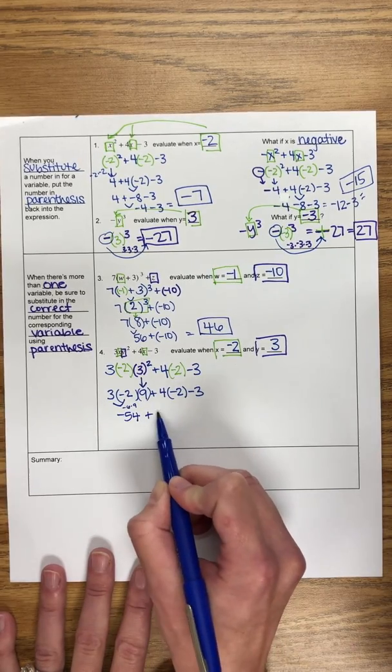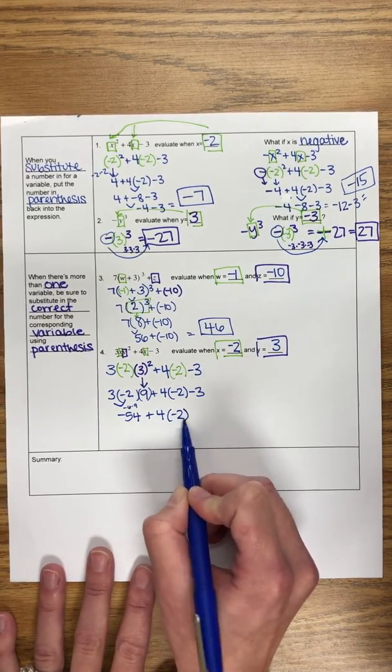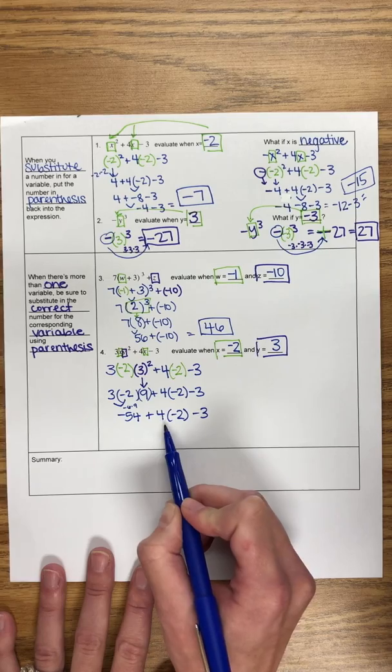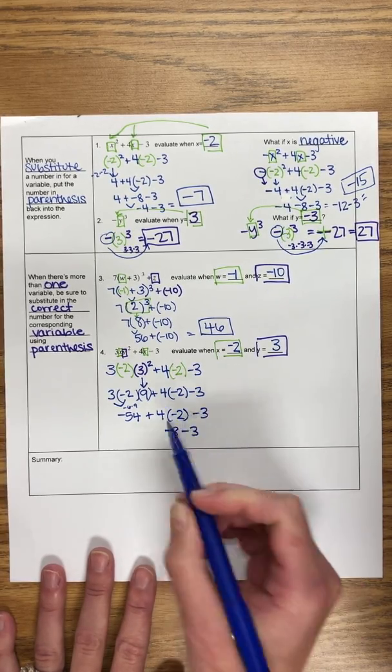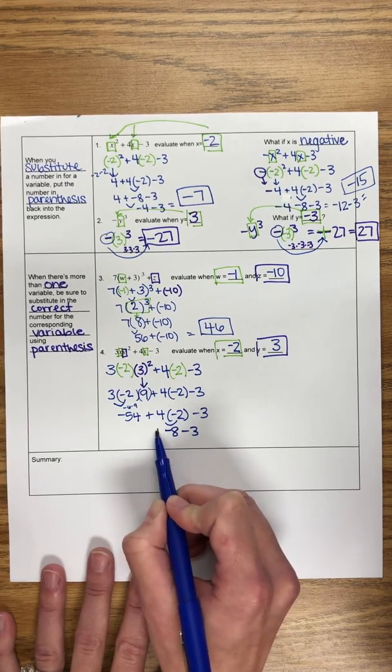So I can jump right there. Save a little handwriting. And then I can also jump here and multiply this. That gives me negative 8 as my next step.